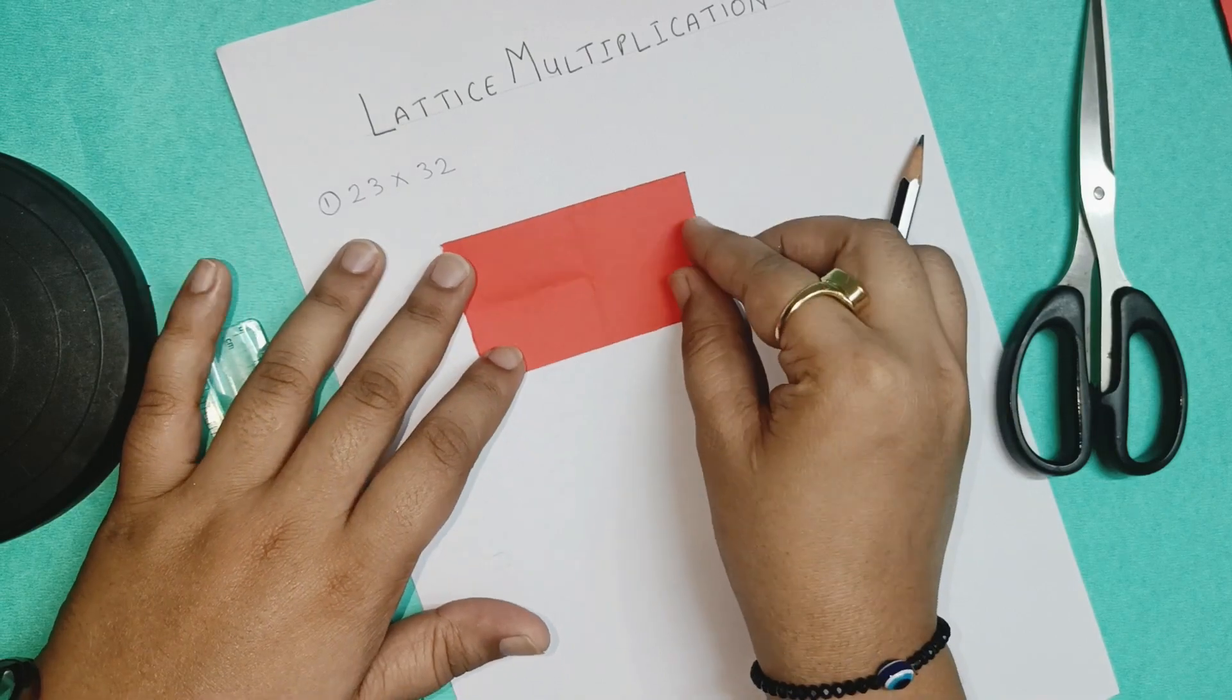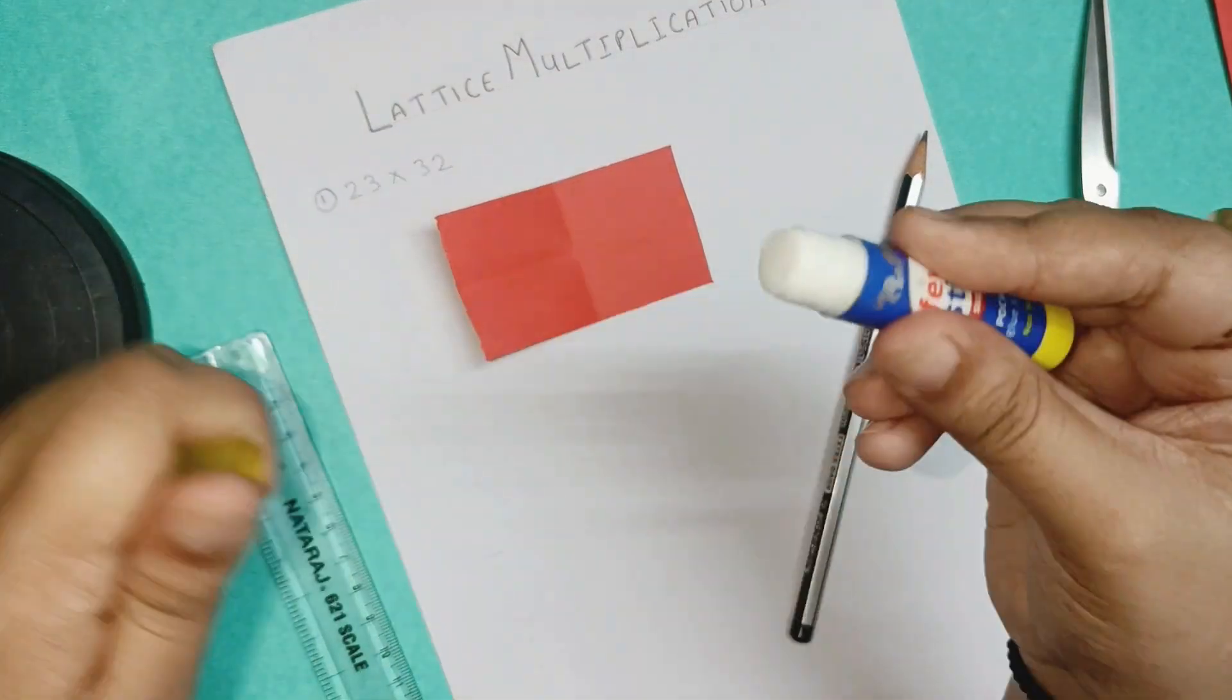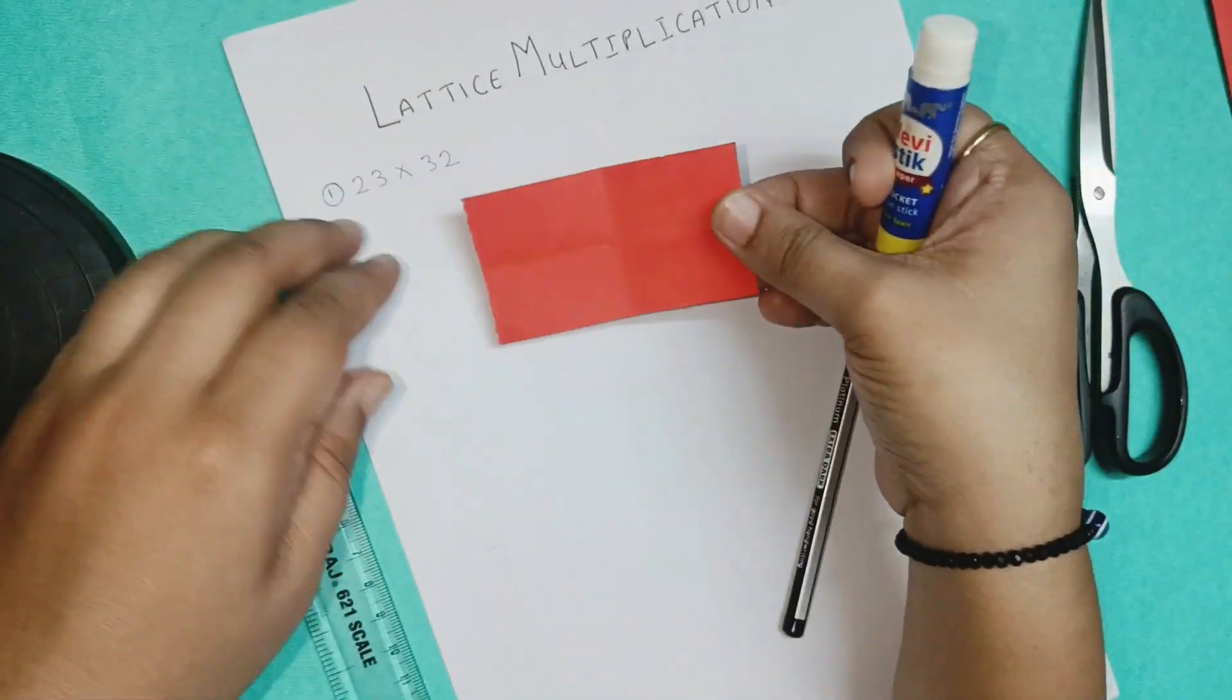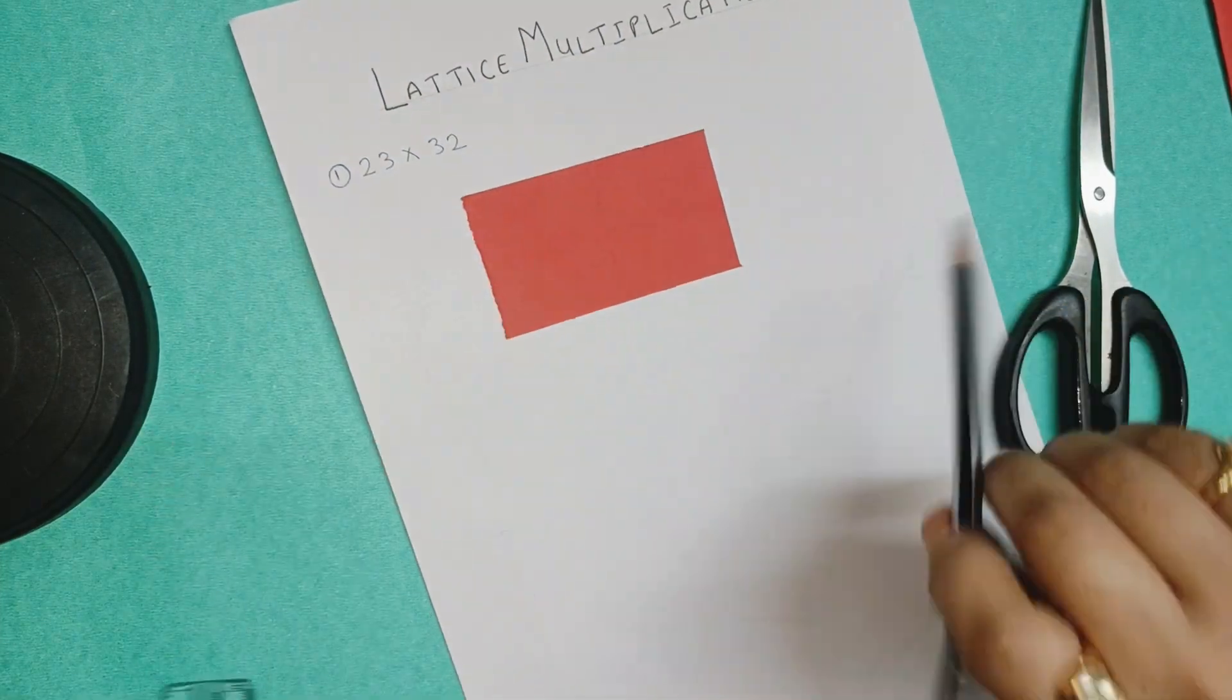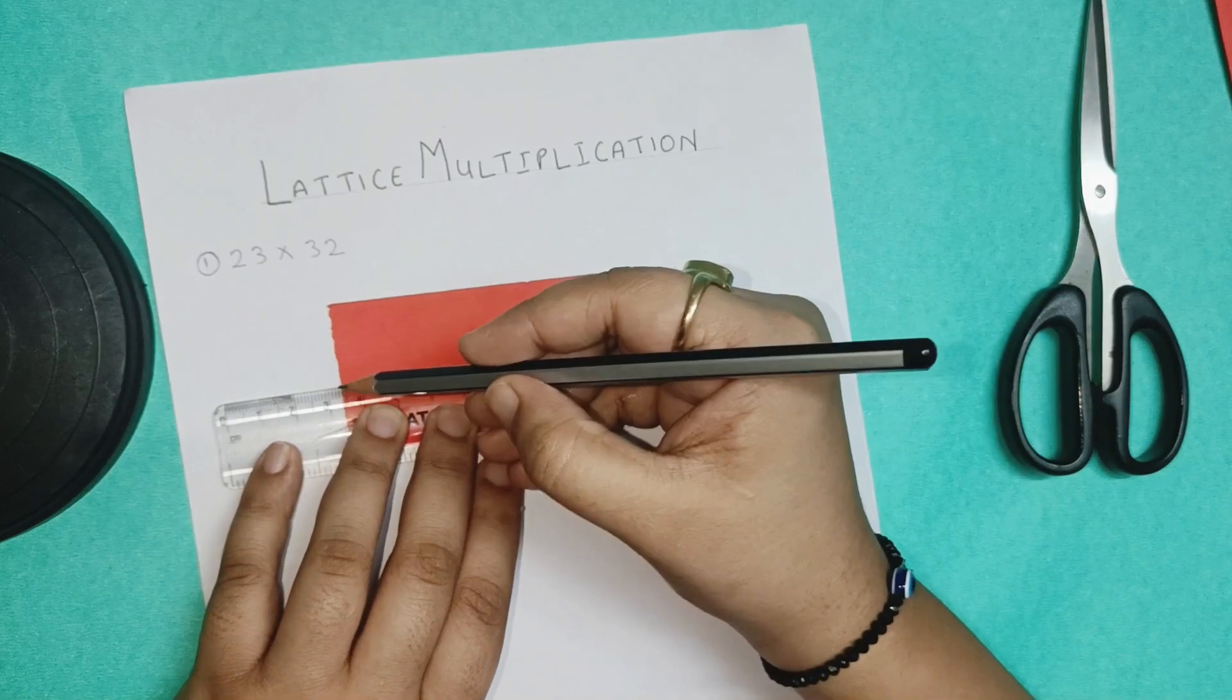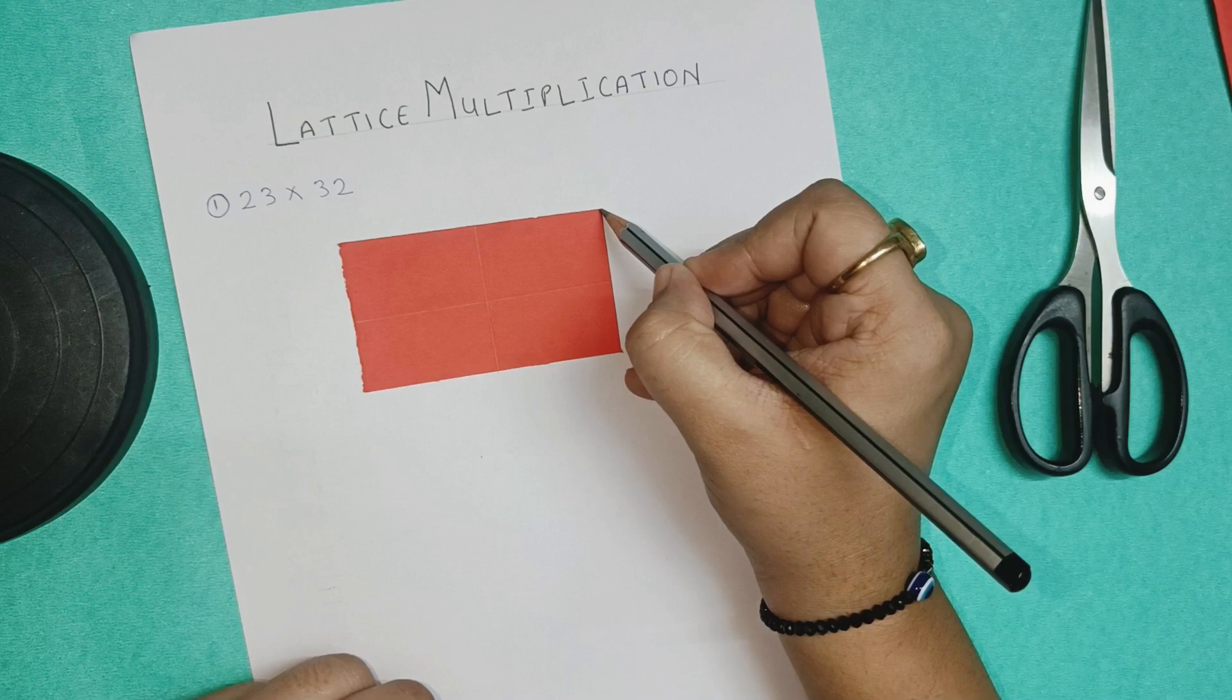Now use the adhesive and paste it. After pasting it, use the pencil and ruler to draw lines over the marks that we got by folding the sheet. Simply use ruler and pencil to draw the lines. You can draw dark lines also. I will use pen later on to overwrite this.